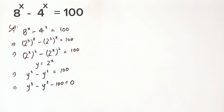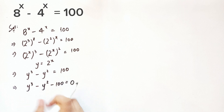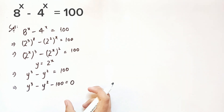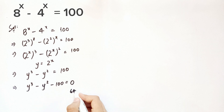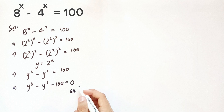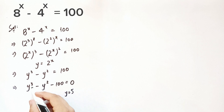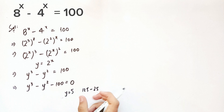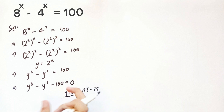Now we have this cubic expression, so we can find one factor by trying some values for y. Trying 1, 2, and 3 gives values that are too small. Trying 4: 4 cubed is 64 and 4 squared is 16, still smaller. When we try y equals 5, we get y cubed equals 125 and y squared is 25, so y equals 5 is a solution.